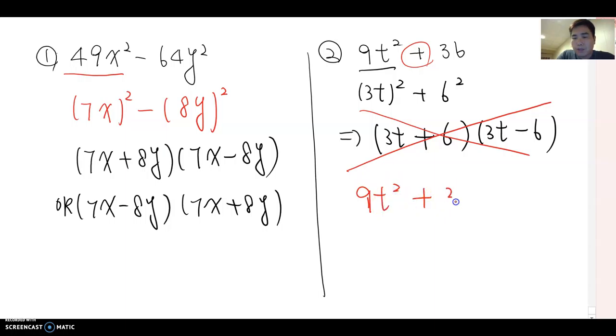Therefore, 9t² + 36 is already a prime term. It cannot be factored. So please don't forget: square binomial factoring works only with the minus sign, not the plus sign.